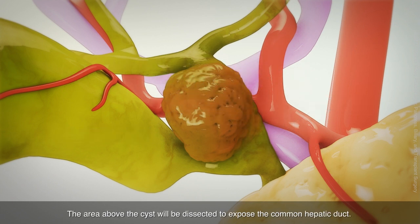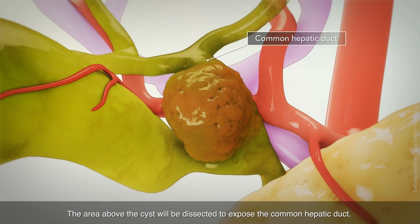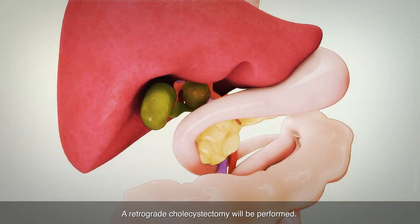The area above the cyst will be dissected to expose the common hepatic duct. A retrograde cholecystectomy will be performed.